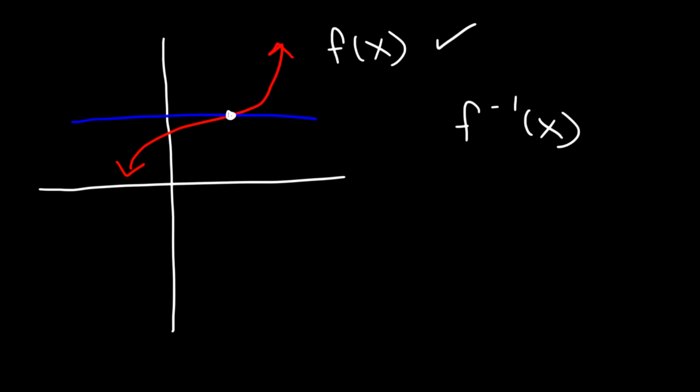For a one-to-one function, for every x value there's only one y value, and for every y value there's only one x value. So if f of x passes the horizontal line test — meaning it's one-to-one — then the inverse will pass the vertical line test, which means the inverse is a function.